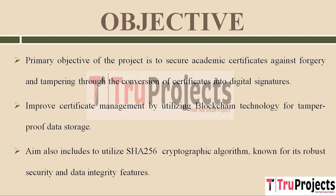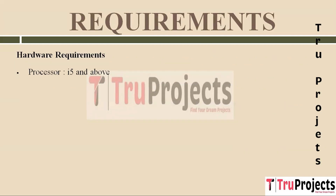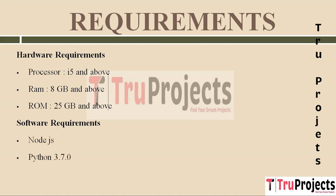The project aims to leverage the SHA-256 cryptographic algorithm for digital signatures, ensuring the authenticity and data integrity of academic certificates. Hardware requirements include a processor of i5 and above, RAM of 8GB and above, and storage of 25GB and above. Software requirements are Node.js, Python 3.7.0, and Visual Studio Community version.